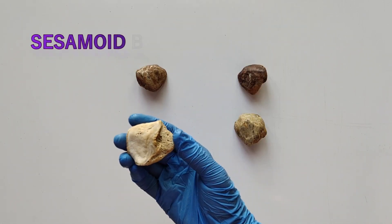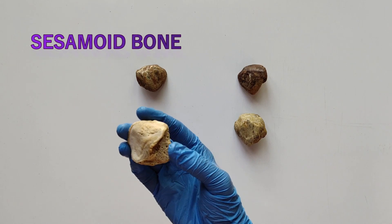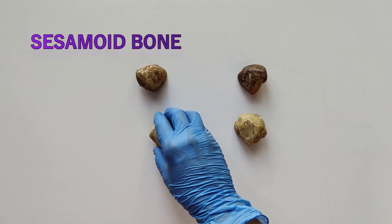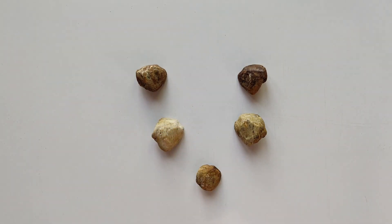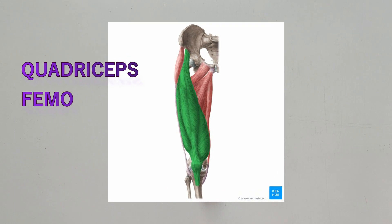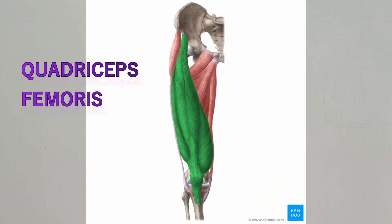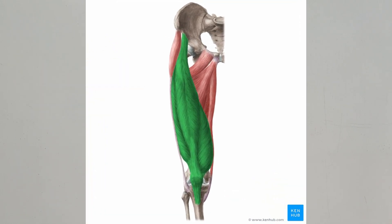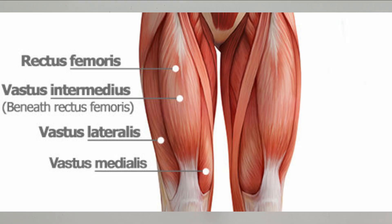A sesamoid bone is a bone which develops within and is found embedded within a tendon or a muscle. The patella is the largest sesamoid bone in the human body. It is developed in the tendon of the quadriceps femoris muscle and is found embedded in that tendon.